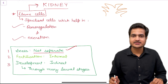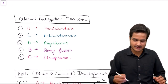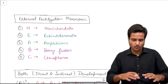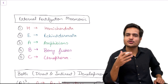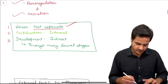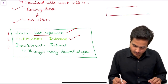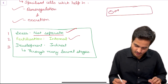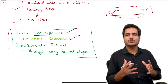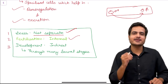The second parameter is fertilization. Using our mnemonic for external fertilization — HE ABC (Hemichordata, Echinoderms, Amphibians, Bony fishes, and Ctenophora) — Platyhelminthes is not in this list, so it must have internal fertilization. In a flat worm, one end has a male sex organ and the other a female sex organ; the gamete fertilizes internally inside the body of the flat worm.